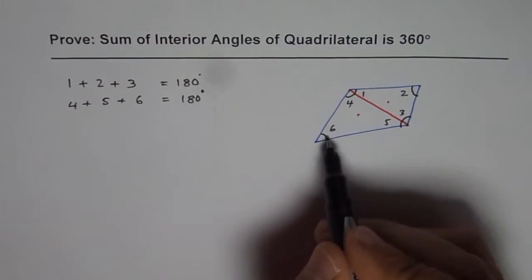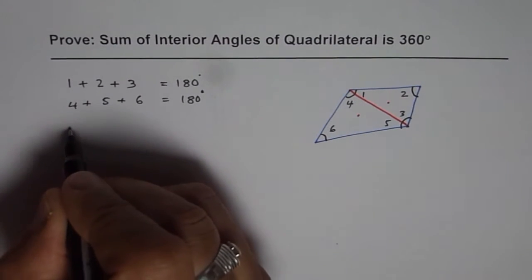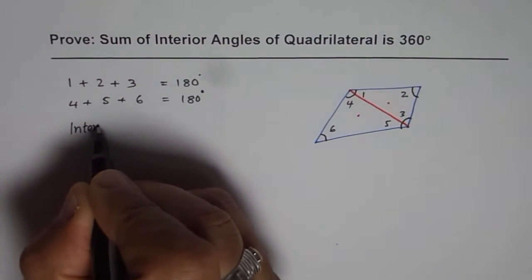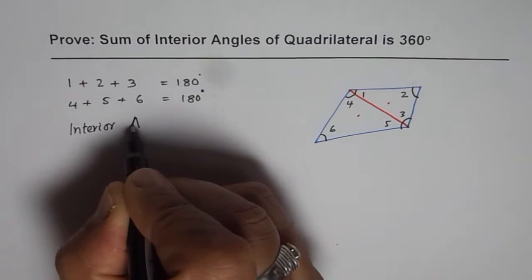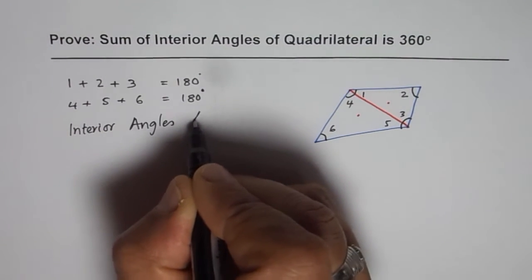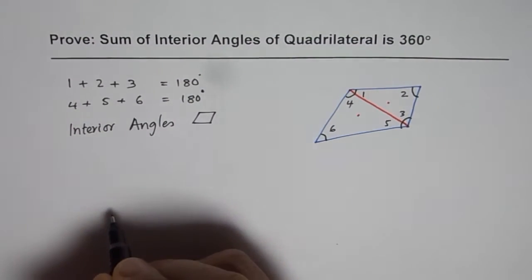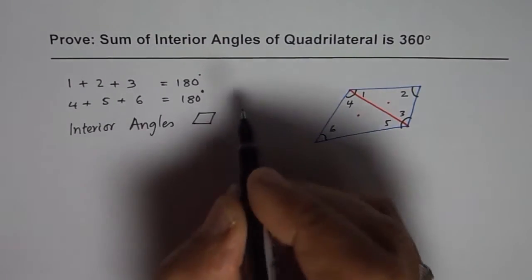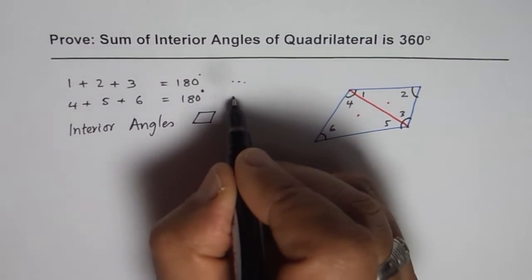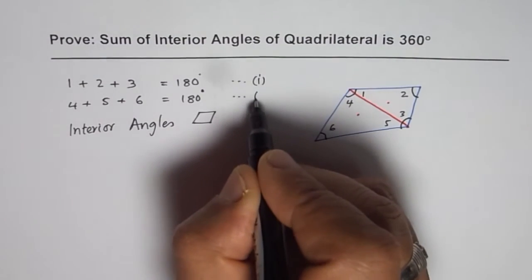If we add them all, they become interior angles. So interior angles of quadrilateral, four-sided figure, should be sum of the above two. So we can add one and two.